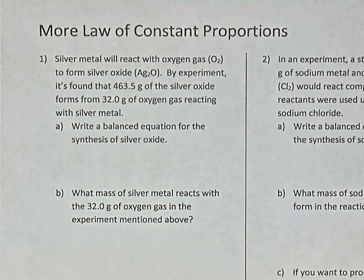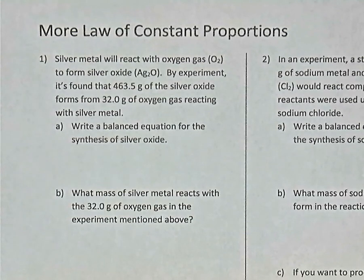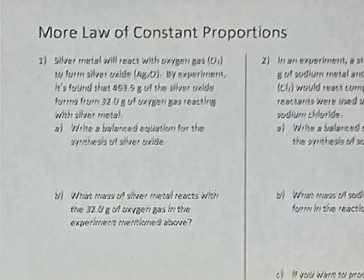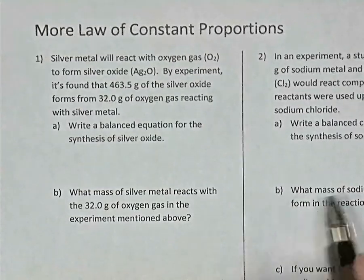The first question says silver metal reacts with oxygen gas and forms silver oxide. The experiment finds that 463.5 grams of silver oxide forms when 32 grams of oxygen reacts with silver metal. Write a balanced chemical equation for the synthesis of silver oxide.